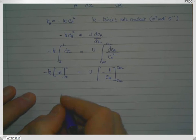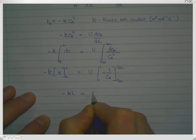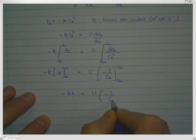So that's fairly straightforward. That gives us minus K times L is equal to U multiplied by minus 1 over Ca L, minus minus, so that becomes plus 1 over Ca naught.